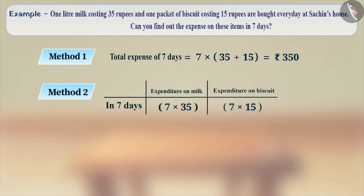Then we will add them and get the total expenditure. Total expenditure equals 7 into 35 plus 7 into 15, which equals 245 plus 105, which equals 350.